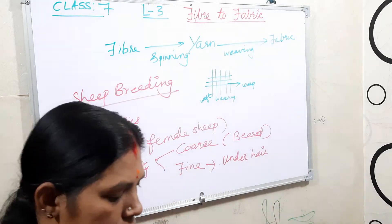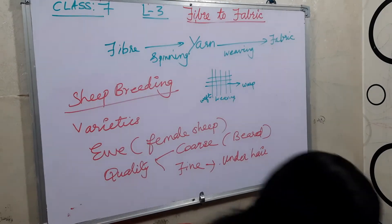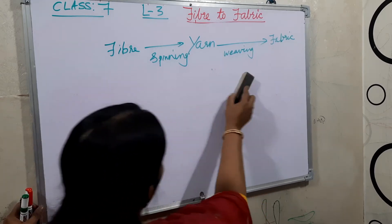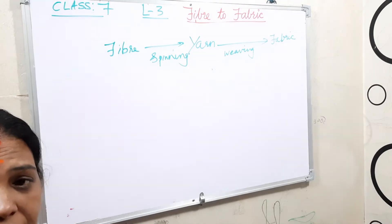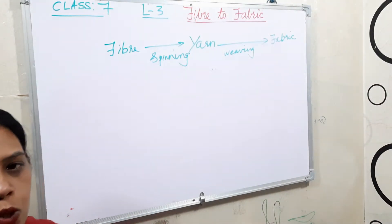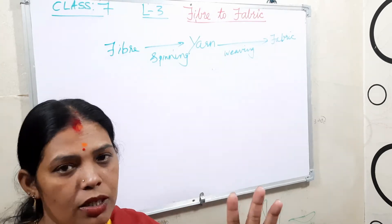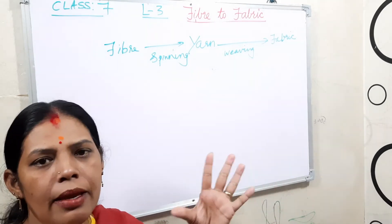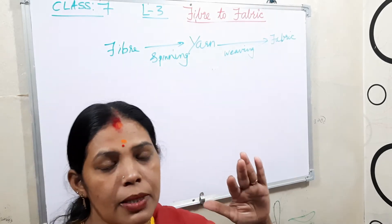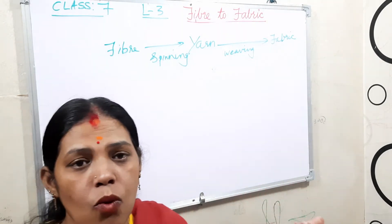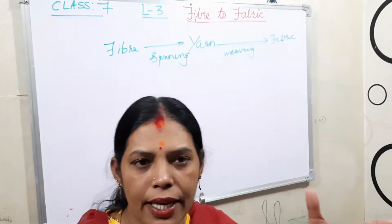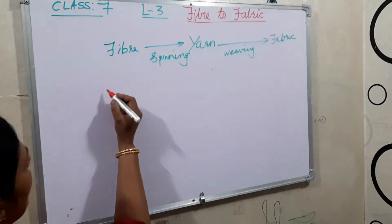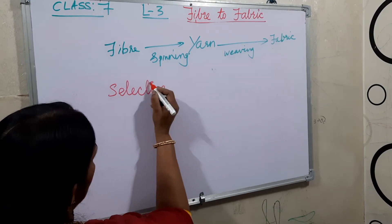Scientists who breed sheep select particular types of sheep only. If you want a good yield of wool, you have to choose the best partners, so that when they breed they will give active offspring with good quality wool yield. This process is known as selective breeding.